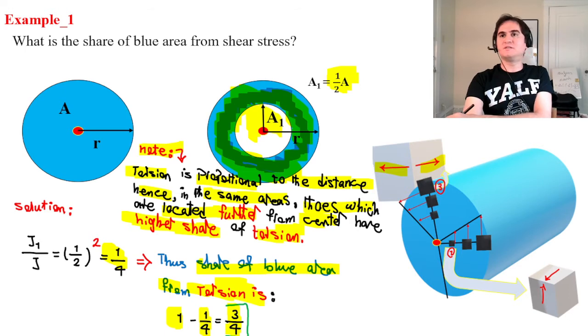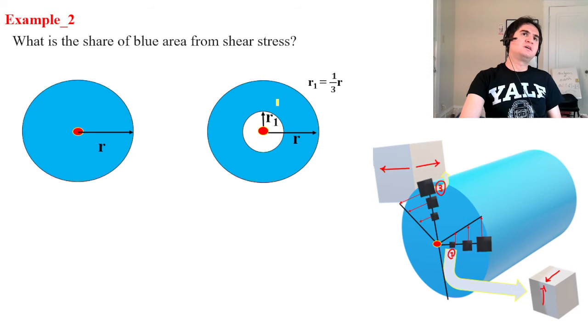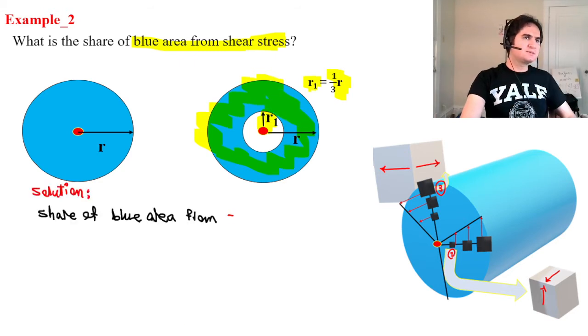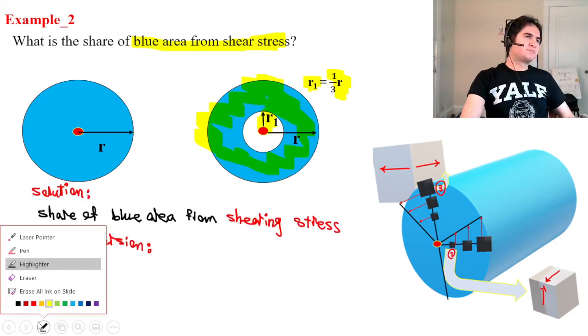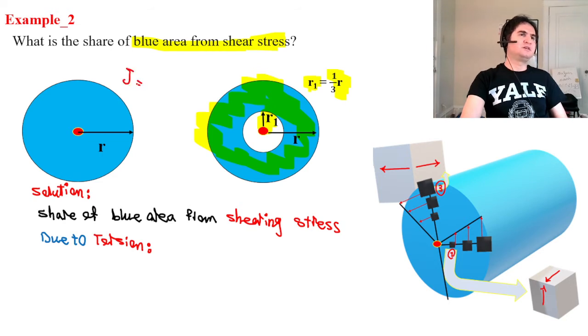Let's observe it in another example. What if R1 is a 1 third of R? Now, what is the shear of shear stress for the rest of blue areas over here? In this case, again we do know J is a half of pi C to the power of 4. So that's R equal to C, C4 or R4.